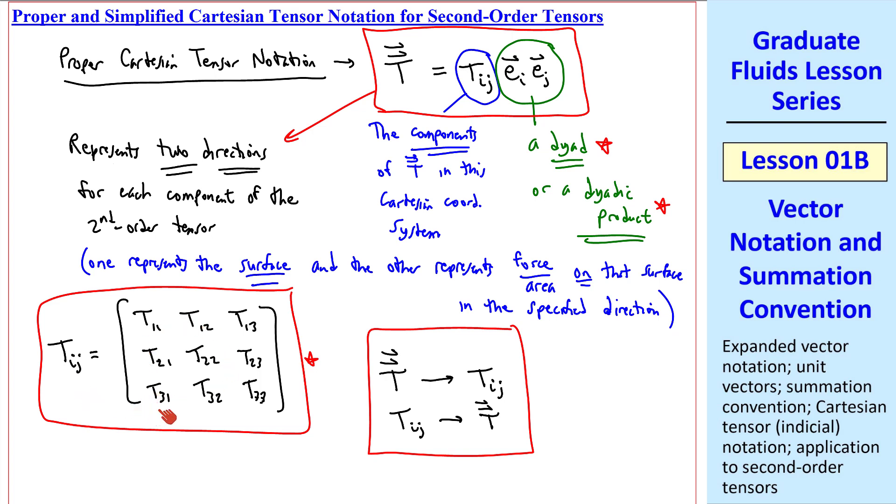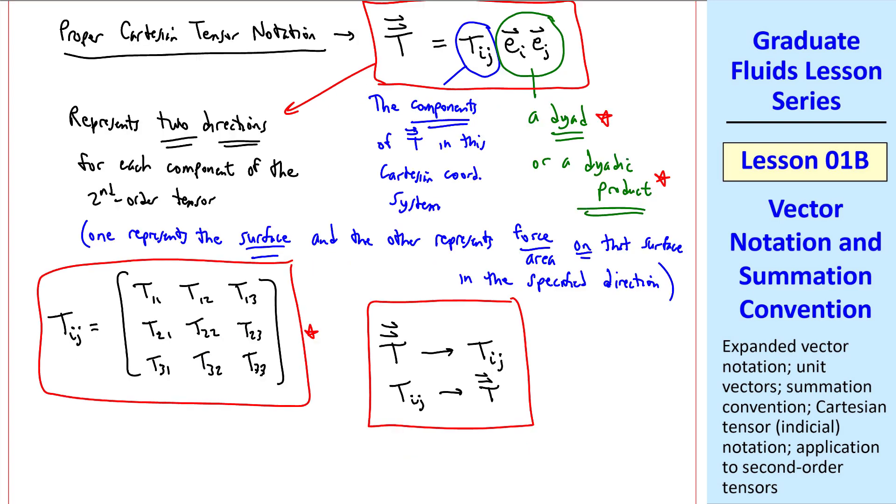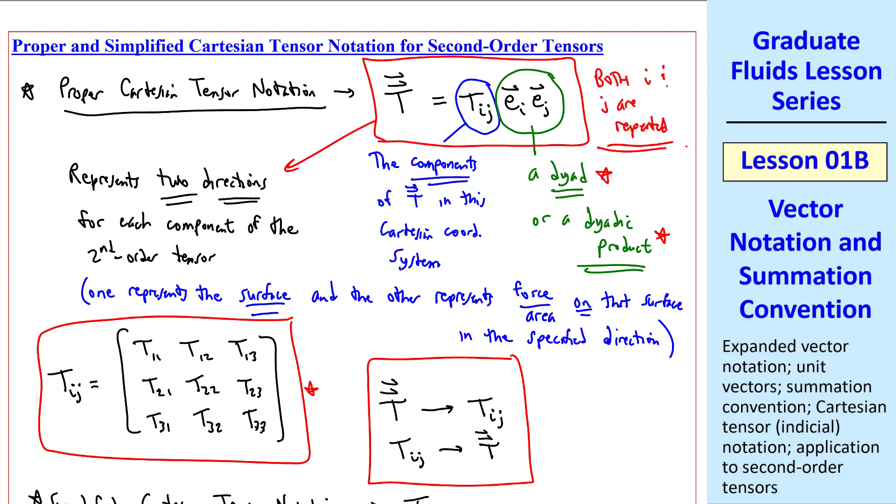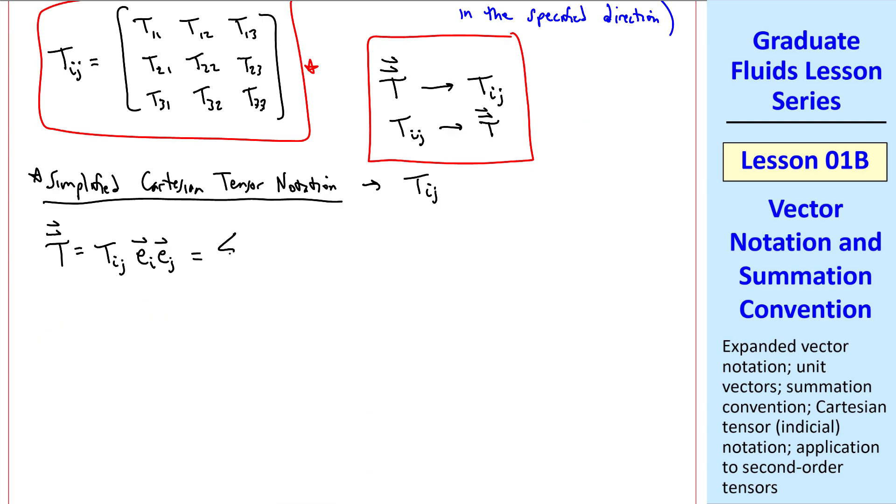When we write tij this way, we think of it in our mind as one of these nine components, depending on our choice of i and j. Whereas we call this proper Cartesian tensor notation, I like to call the simplified tensor notation version when we just write tij. Notice up here that both i and j are repeated, which by convention means they are summed. So in our minds, we remember that this means we sum over both i and j.